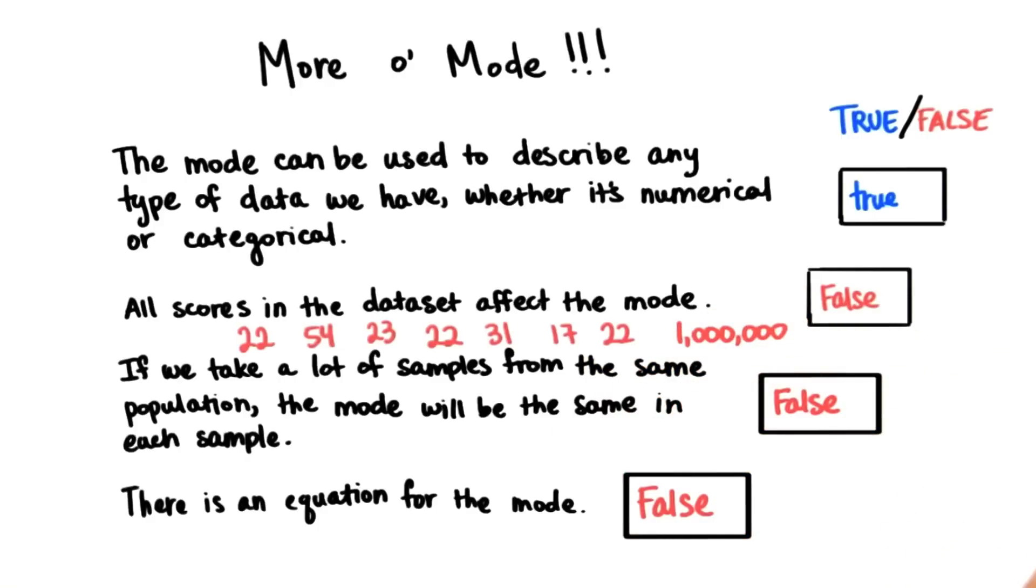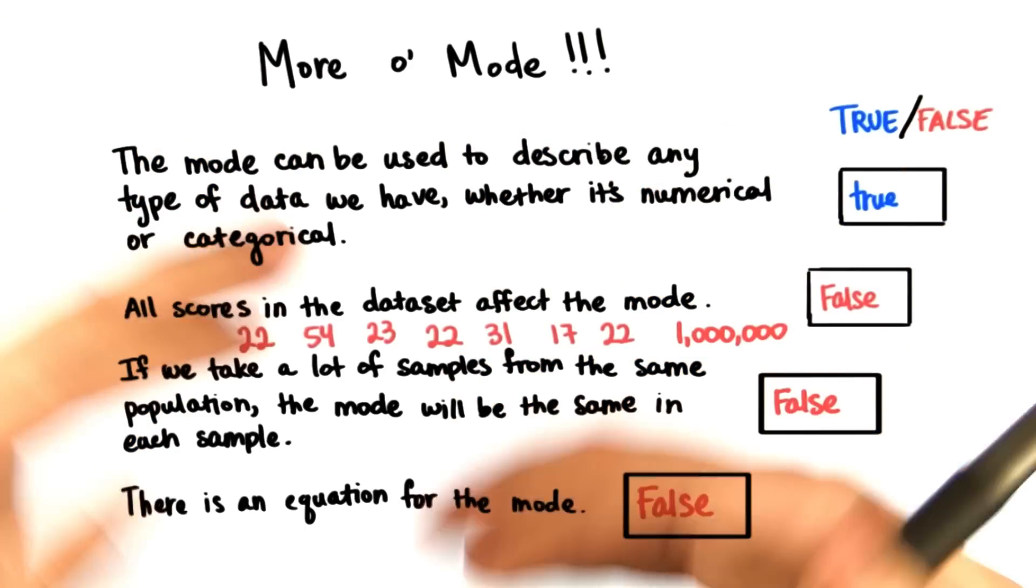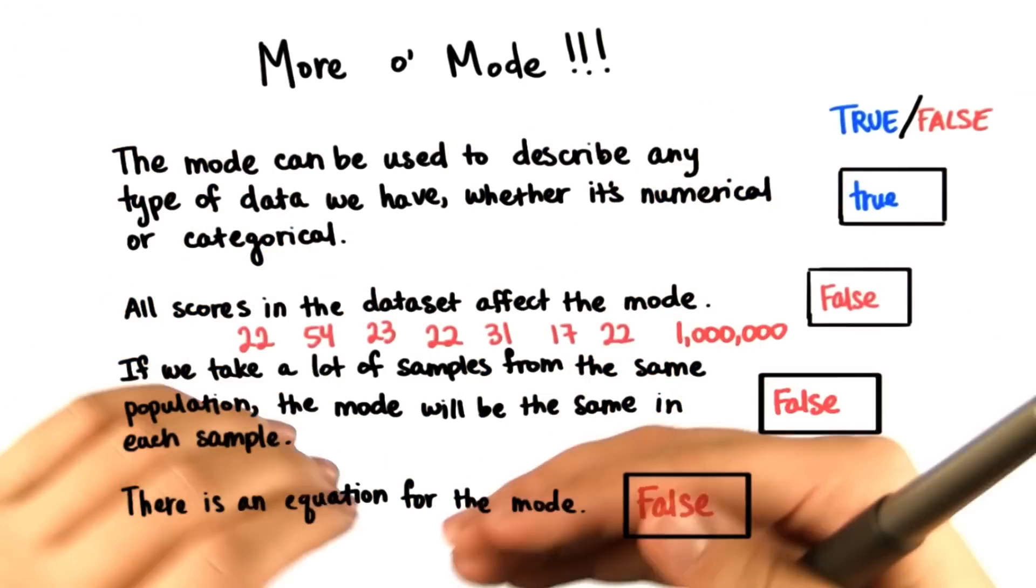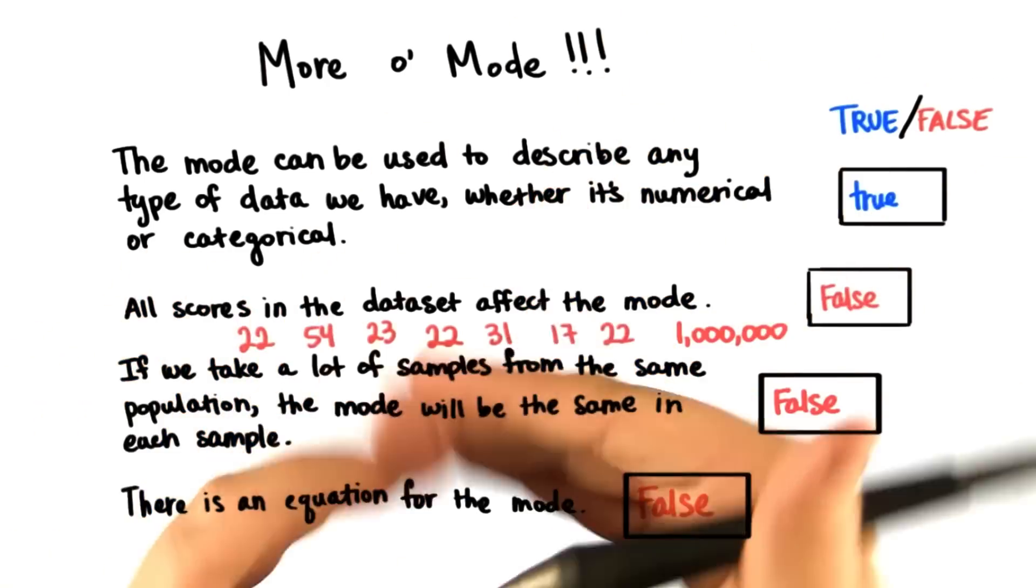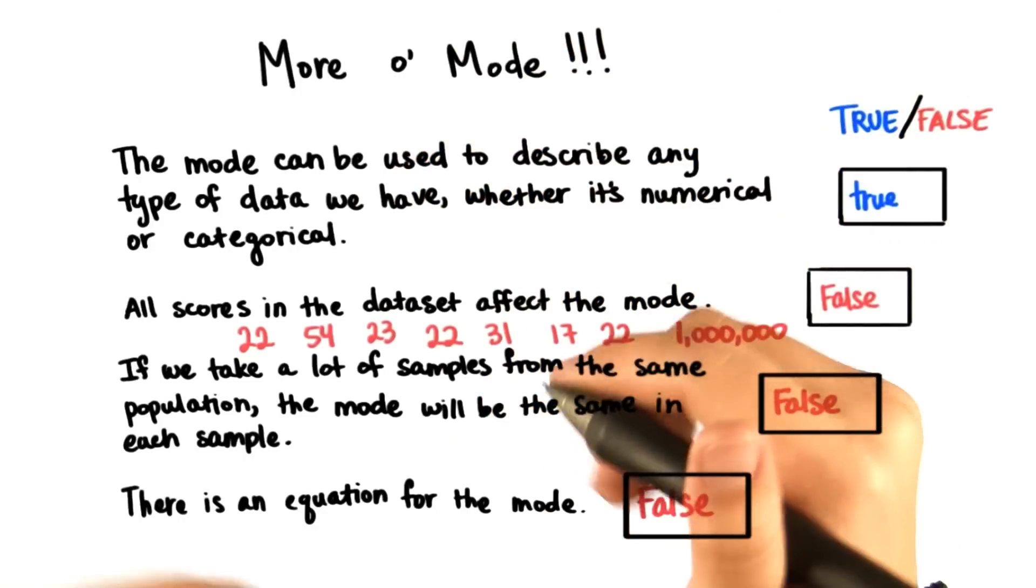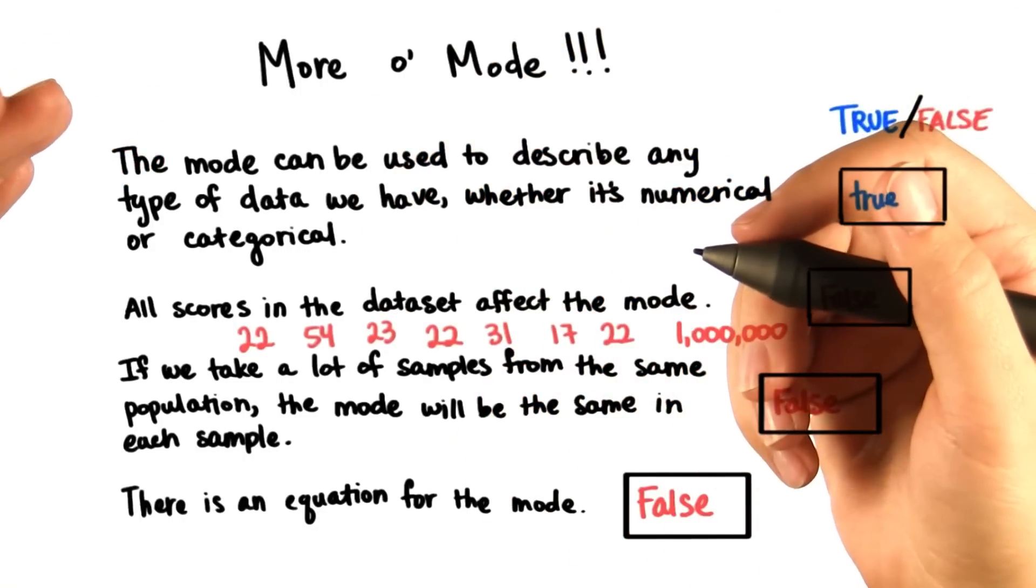And finally, this last one is false. While there's a procedure to find the mode, where you look at all the data values, you see which one occurs the most. Or you look at the histogram, and you see which bin has the highest frequency. We can't describe the mode with an equation. And this is why we often use the mean, or the average.